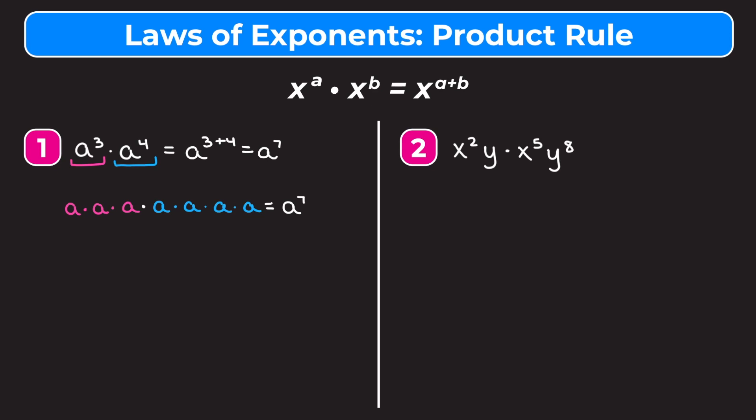Let's take a look at example two, which is x squared times y times x to the fifth times y to the eighth. What I like to do is first rearrange my terms so that all of the terms with the same base are next to each other. So I'm going to rearrange this to be x squared times x to the fifth times y times y to the eighth — remember, we can do that because it doesn't matter the order in which you multiply things.